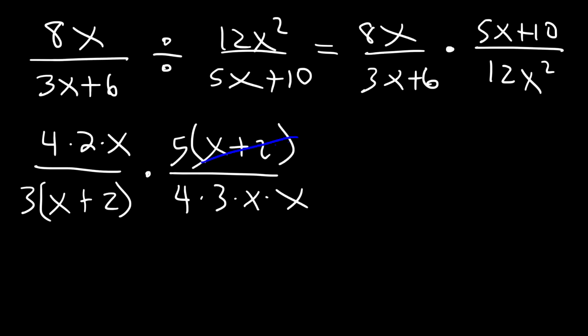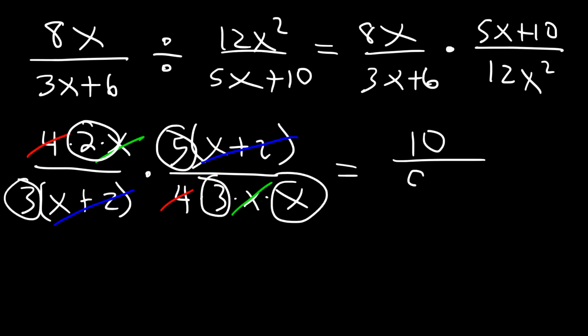So now, notice that we can cancel an x plus 2. We can also get rid of a 4. And we can get rid of an x. Alright, so what we have left over is on top, we have 2 times 5. So that's 10. And on the bottom, we have 3 times 3, which is 9, times x. So that's 9x. So the answer is 10 divided by 9x.